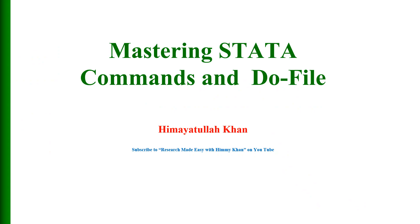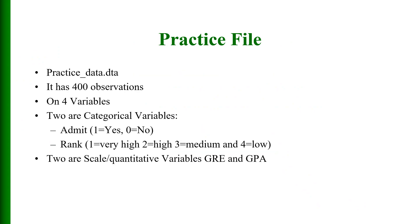Welcome ladies and gentlemen, this is video number 107 and I am going to discuss mastering data commands. In this video I am going to use a practice file named practice data with extension DTA. This file has 400 observations on four variables: two categorical variables — admit, labeled 1 for yes and 0 for no, and rank with four levels — and two quantitative variables: GRE score and GPA.